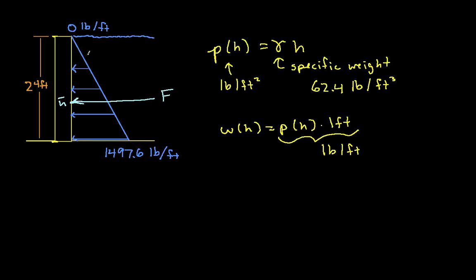One way to think about this is to think about the force, or think about this water, this distributed force as a triangle. The magnitude is just going to be the area of the triangle. In this case, it would be 0.5 times the base, which is 1497.6 pounds per foot, times the height, which is 24 feet.